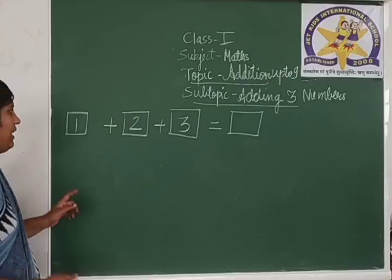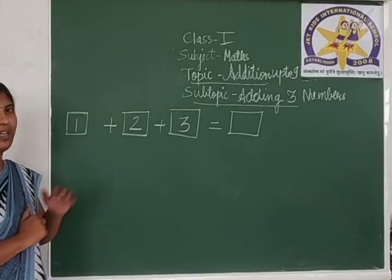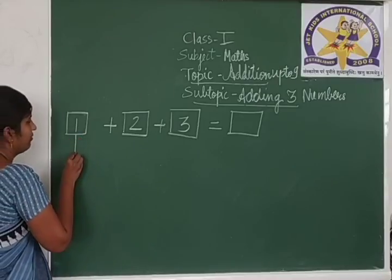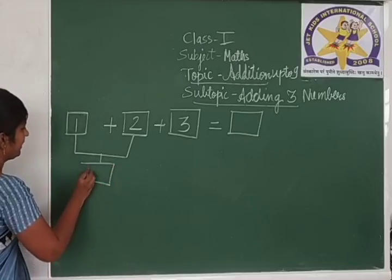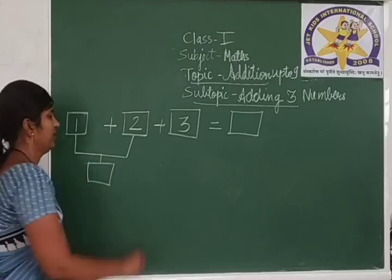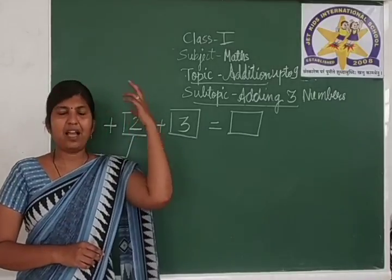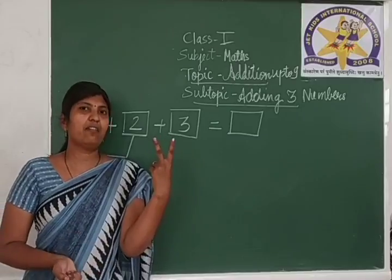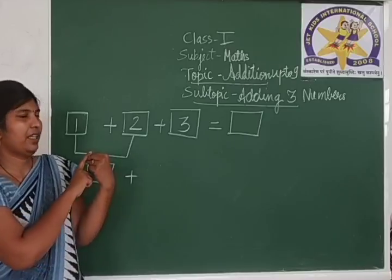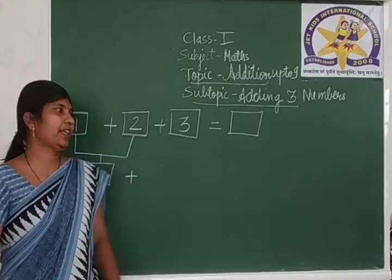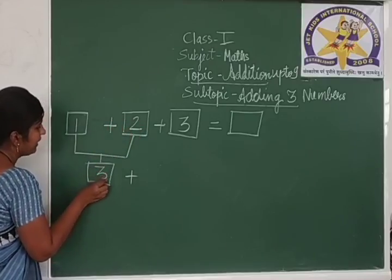How are we going to add it? We are going to add the first 2 numbers. Let us add 1 and 2. We are going to write the answer here. So 1 plus 2: keep 1 in mind and 2 on your fingers. Count after 1: 2 and 3. So what is the answer? It is 3. When we add these 2 numbers, 1 and 2, we got the answer 3.